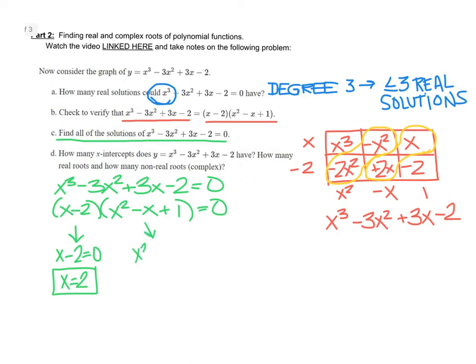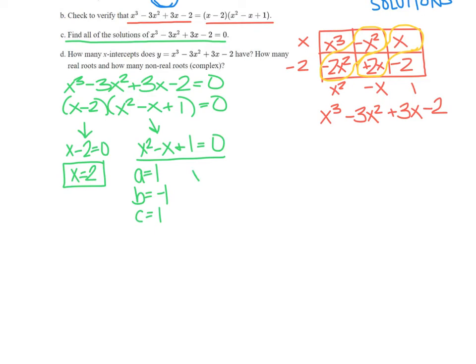Then we have x squared minus x plus 1 equals 0. And that doesn't factor. So we either need to complete the square or we can use quadratic formula. Let's go ahead and use quadratic formula for this one. When we do that, we have a equals 1, b equals negative 1, and c equals 1 taken from those coefficients.